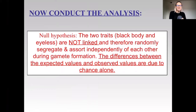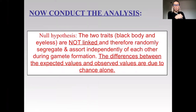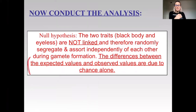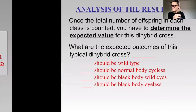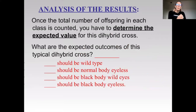So how do we actually conduct the analysis? The null hypothesis is that these two traits — black body and eyeless — are not linked. Therefore they randomly segregate and assort independently of each other. The key point is: there is no significant difference between the expected values and the observed values. In other words, the differences between the expected and the observed values are due to chance alone.